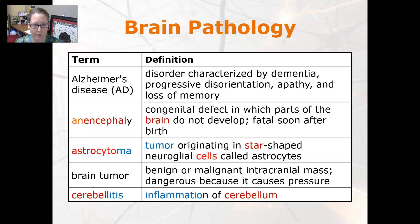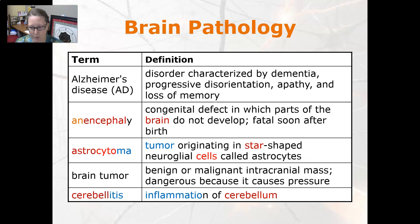Astrocytes are part of the cells that help you make memories and make connections between your neurons — they have other roles too. Brain tumor is either a benign or a malignant intracranial mass. It is dangerous because it causes pressure on the brain and can cause loss of function in the area where there's pressure.